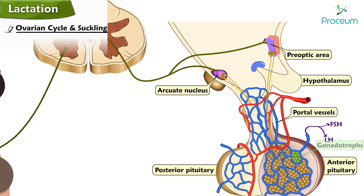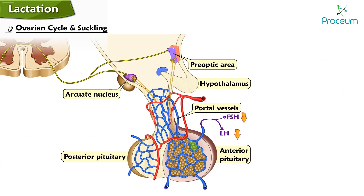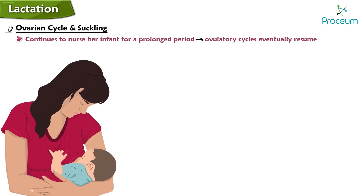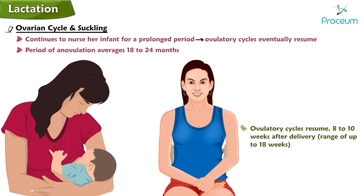Normally, GnRH travels via the portal vessels to the gonadotrophs in the anterior pituitary. Suckling likely reduces the release of GnRH by neurons in the arcuate nucleus and pre-optic area of the hypothalamus; decreased GnRH reduces secretion of FSH and LH, negatively affecting ovarian function. As a result, breastfeeding delays ovulation and normal menstrual cycles. If the mother continues to nurse for a prolonged period, ovulatory cycles eventually resume; suckling intensity and frequency determine the duration of anovulation and amenorrhea, which averages 18 to 24 months in well-nourished breastfeeding women. If the mother does not nurse after delivery, ovulatory cycles resume on average 8 to 10 weeks postpartum, with a range of up to 18 weeks.